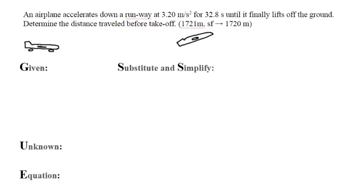An airplane accelerates down a runway, so I know that it accelerates at a rate of 3.20 meters per second squared, and I know that it does that for 32.8 seconds, and then it lifts off the ground. The one thing that I don't know that isn't necessarily given to me is that the velocity initial is 0 meters per second.